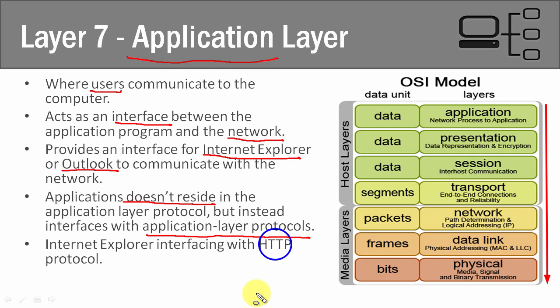To recap: layer 7, the application layer, is the very top layer. This is where you and applications on your computer are going to be interacting with application layer protocols that interface with the network. For example, Internet Explorer interfaces with HTTP to get out to the internet, and Outlook interfaces with IMAP to send and receive emails. It is not the actual application that resides in this layer, but rather the application layer protocols.